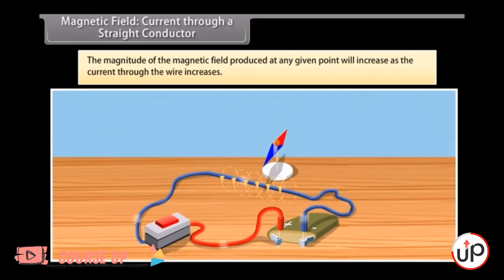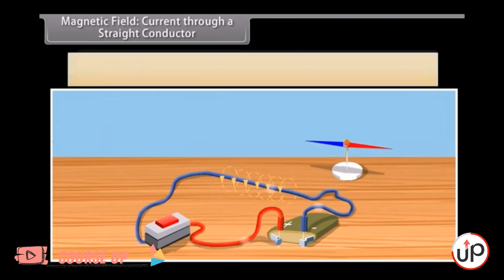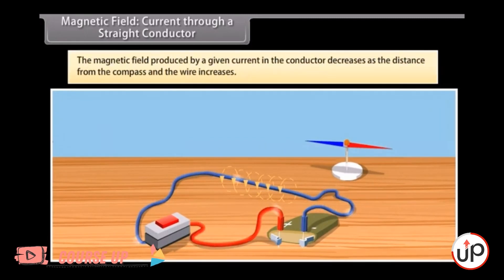Now try moving the compass away from the current passing through the wire. You will see that the magnetic field produced by a given current in the conductor decreases as the distance from the compass and the wire increases.